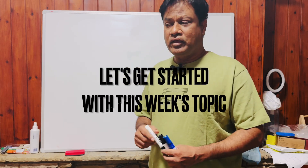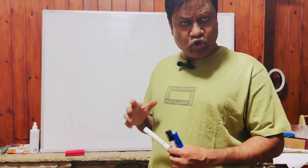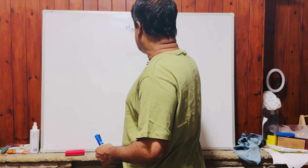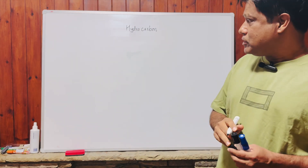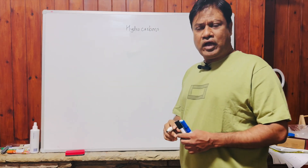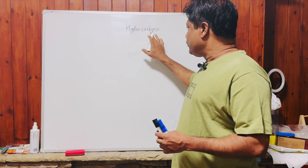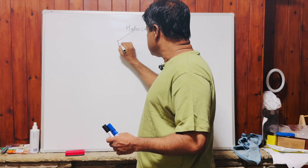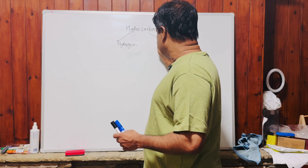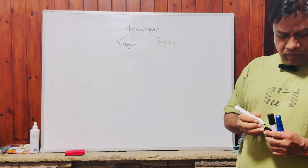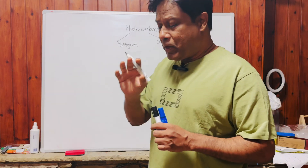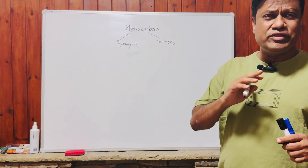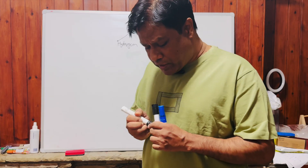Hi guys, welcome back to my channel. Today I'm going to teach you a new topic called hydrocarbons. Hydrocarbons contain two elements: hydrogen and carbon. Both are non-metals. They join together by means of a covalent bond and form a new class of compounds called hydrocarbons. Hydrocarbons are basically organic compounds.